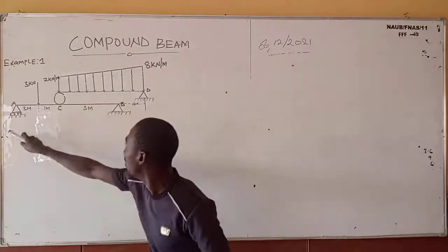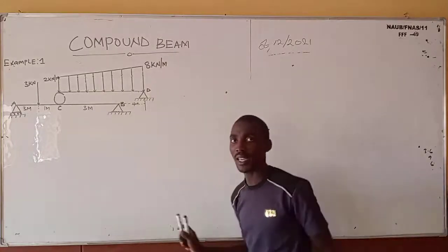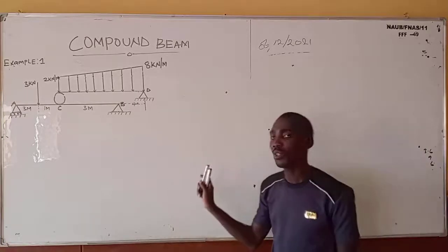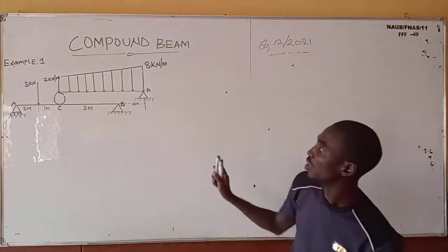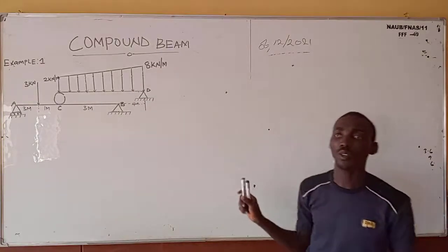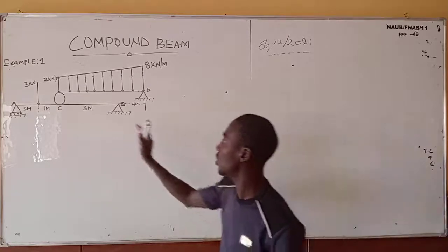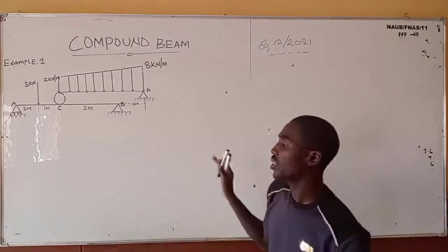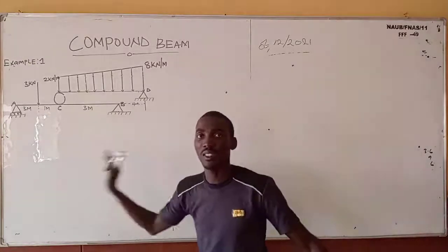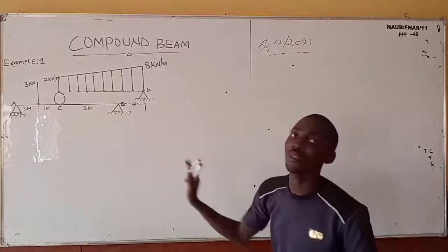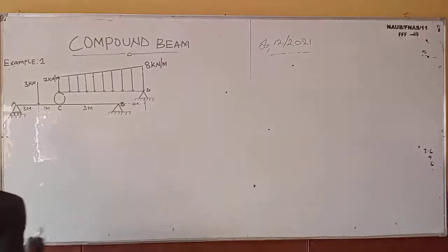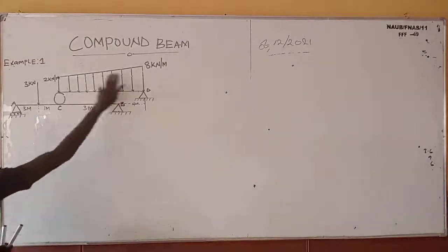So now without wasting time, the first thing to do when you see a question like this is to convert your uniformly distributed load to a point load. After that you draw the free body diagram, then you separate the beam, then you solve for each support separately to arrive at your answer.